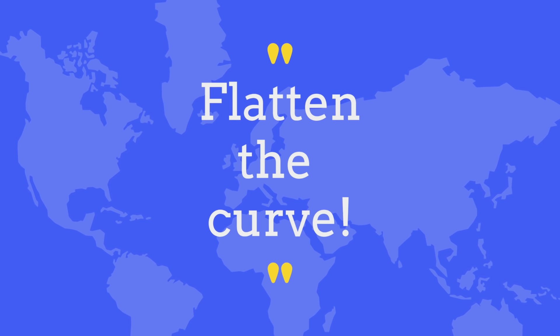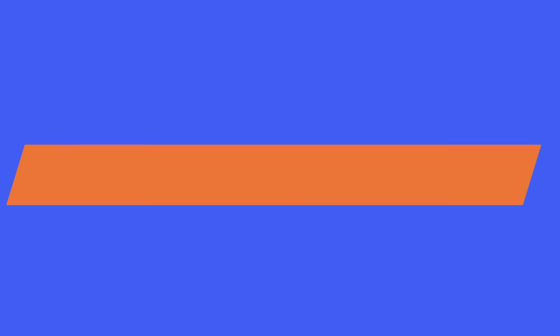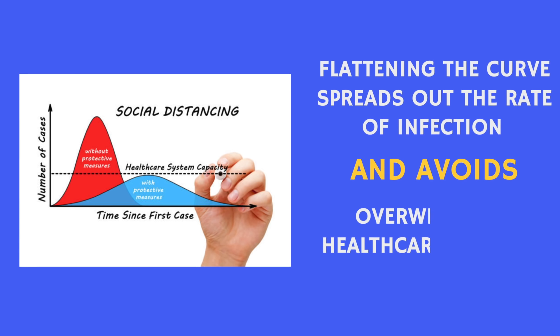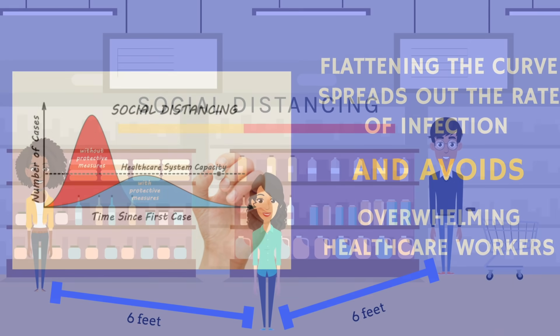Finally, another important term is to flatten the curve. According to the CDC, a curve is a visual display of the onset of illness among cases associated with an outbreak. By flattening the curve, it spreads out the rate of infection to avoid overwhelming healthcare workers. If everyone is outside, more people will get sick at the same time. If you decrease how many people get sick over time, patients can get treatment without exhausting hospitals and resources.